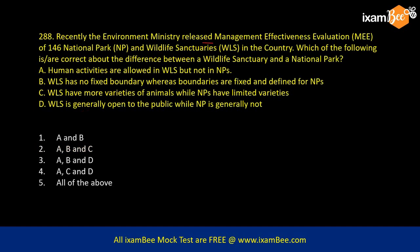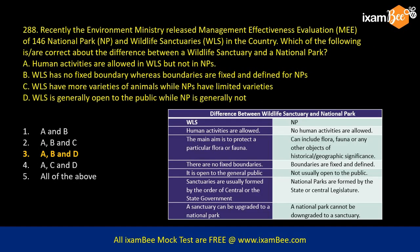The Environment Ministry recently released management effectiveness evaluation for 146 national parks and wildlife sanctuaries. Which of the following are correct about the differences between wildlife sanctuaries and national parks? Human activities are allowed in wildlife sanctuaries but not in national parks. Wildlife sanctuaries have no fixed boundary. Wildlife sanctuaries have more varieties of animals while national parks have limited variety. Wildlife sanctuaries are generally open to the public while national parks generally are not. These differences are covered in the notes — go to iExambi and attempt the mock tests.